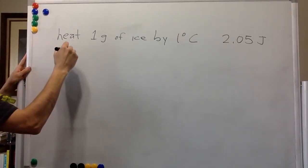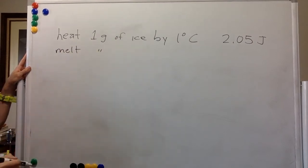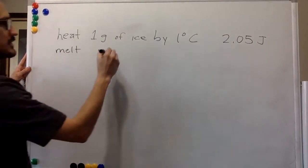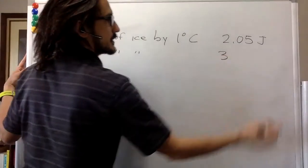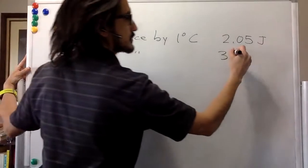So if you want to melt one gram of ice, it will take you, will cost you 333 joules.